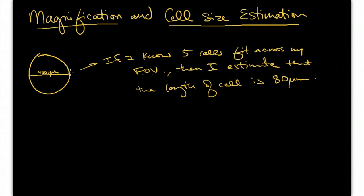It's a pretty simple problem, and you can work backwards. If you know that each cell is 80 micrometers and you've got five of them, then your field of view is 4,000 micrometers. So it's just an algebra problem, a simple division or multiplication.